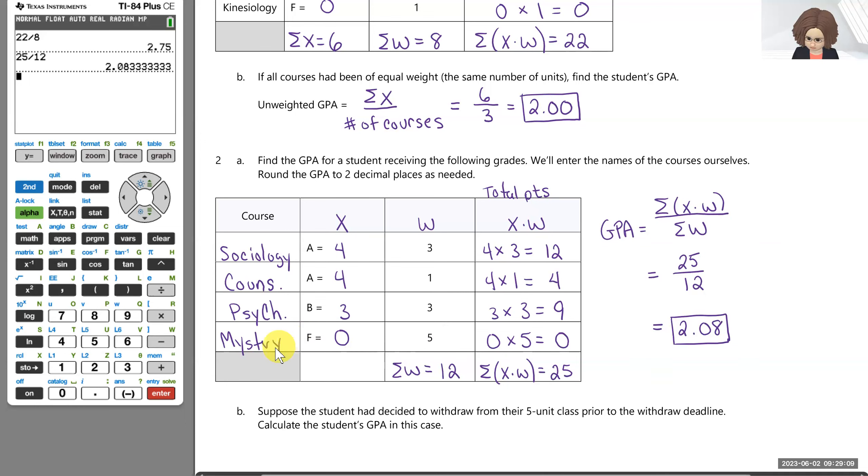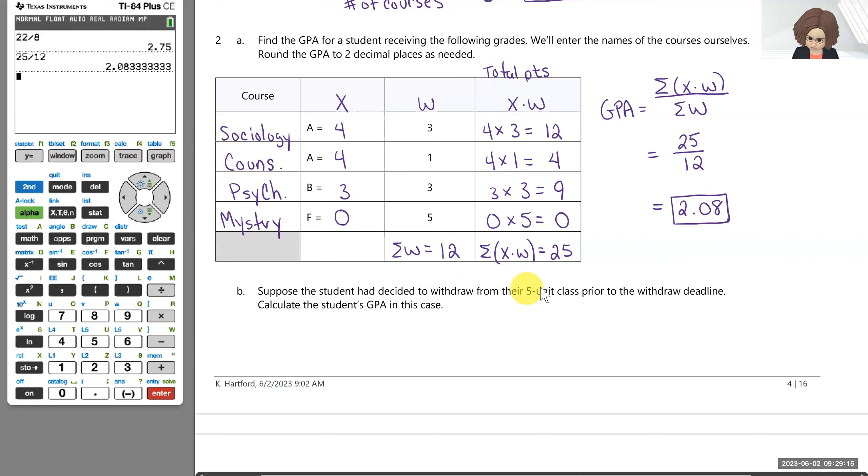So what we're going to do is take a look at what would have happened if the student had decided to withdraw from their five unit class prior to the withdraw deadline. So withdrawing from a class is always something that students need to take a lot of thought in before making any decision. And we won't go into all the details here about pros and cons of withdrawing from a class that you might potentially get an F in. We're just going to assume that this student has decided to withdraw. So basically this mystery course is gone and we want to see how that would have affected their GPA. So withdrawing from a course does not affect the GPA.